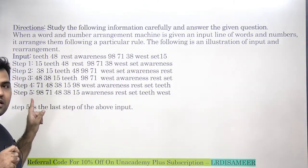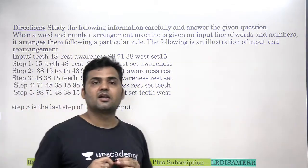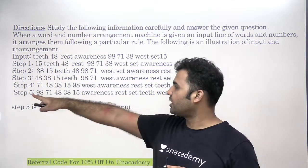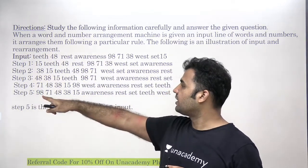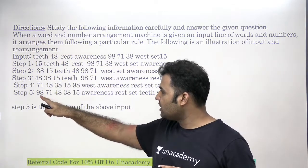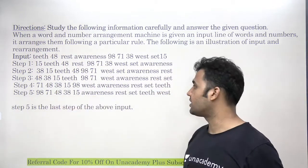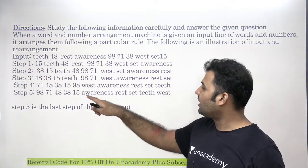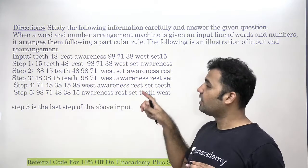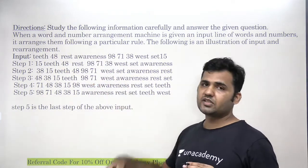First we will look at the last step and you will get to know what is the final result that this machine is looking for. Step 5 will tell me that the final arrangement is to arrange the numbers in decreasing order from left to right, and alphabets to be in increasing order from left to right. Now let's check how the elements are moving step by step.